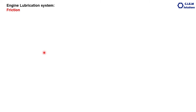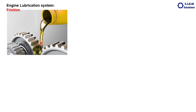Before talking about the engine lubrication system, let's have a brief look at the lubricant or lubricating oil. What is meant by lubricant? This golden color fluid is the lubricant. These two are metallic gears — imagine if the lubricant is not there and the gears mesh each other and rotate. What happens? These gear teeth will always be in contact with each other.